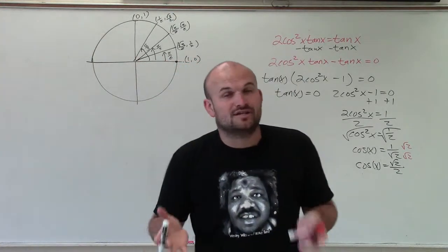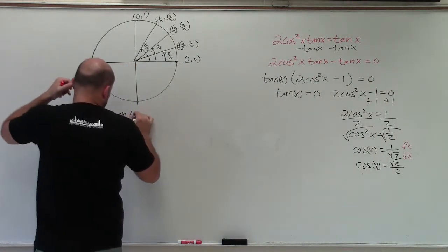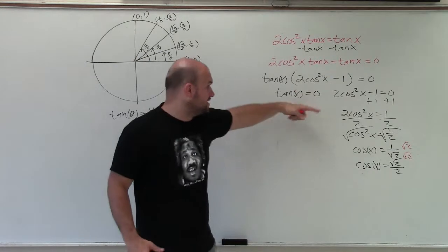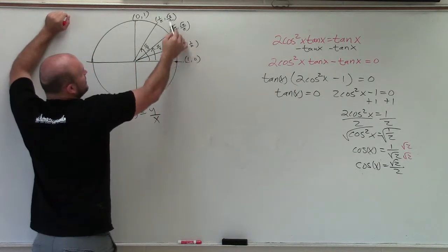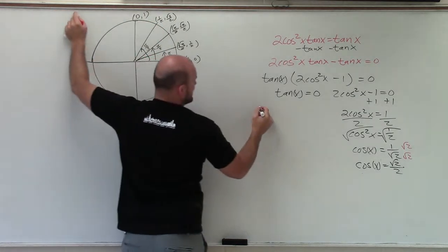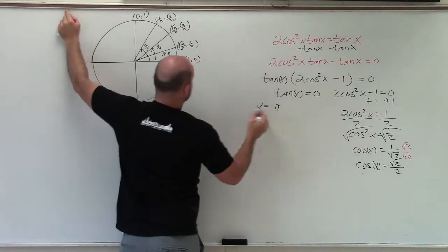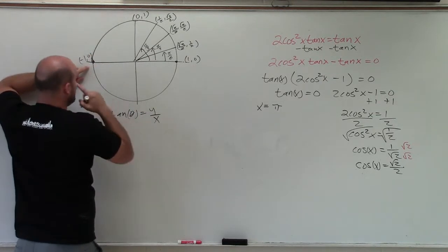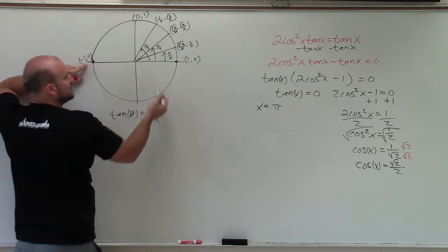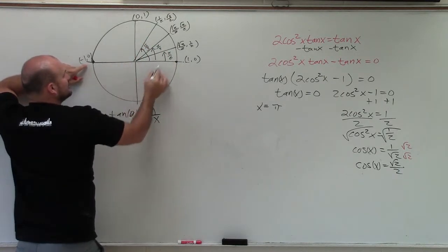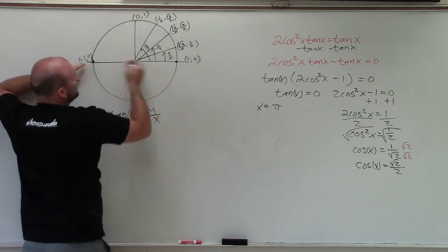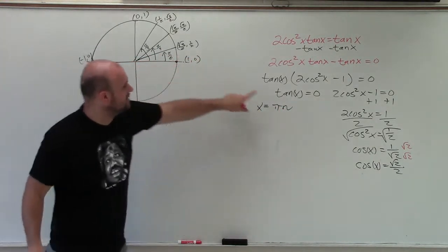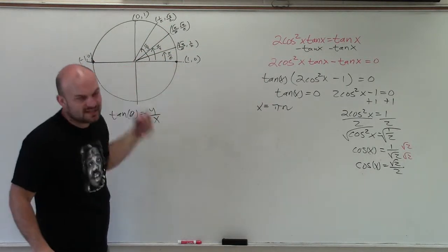The tangent of any angle equals the y-coordinate over the x-coordinate. We need y over x to equal 0. That happens when y is 0, which occurs at (1,0) and (-1,0) on the unit circle. At (1,0), y over x equals 0; at (-1,0), 0 over -1 also equals 0. Any angle ending on the x-axis is a solution — so x equals 0, pi, 2pi, 3pi, etc. We write this as x equals pi times n.